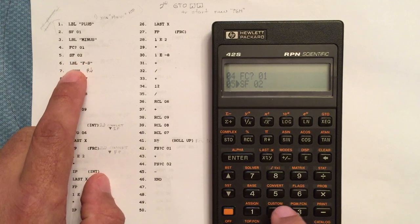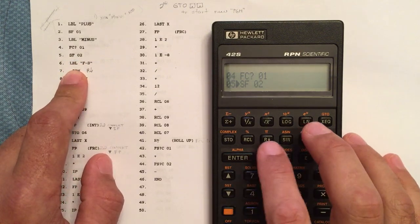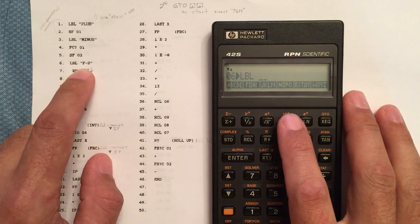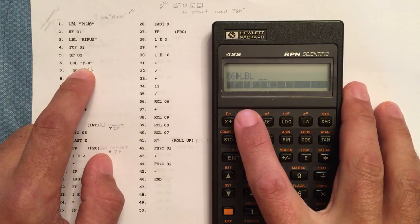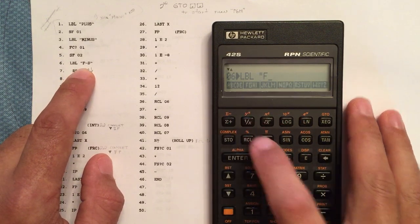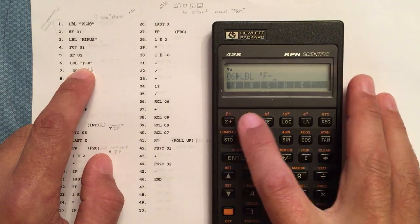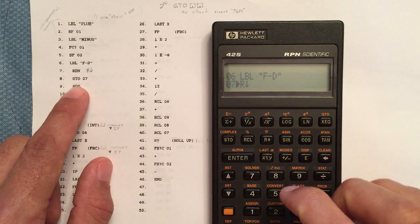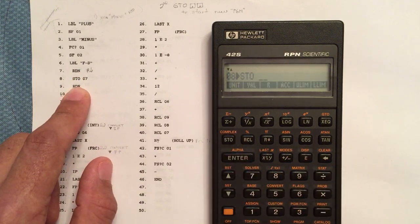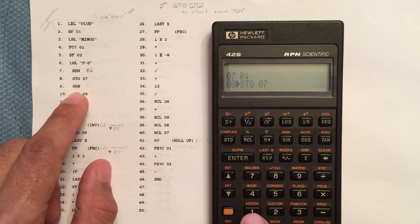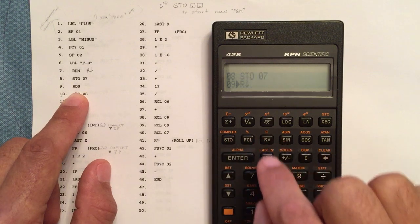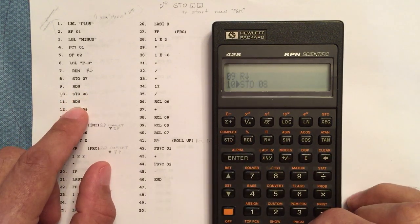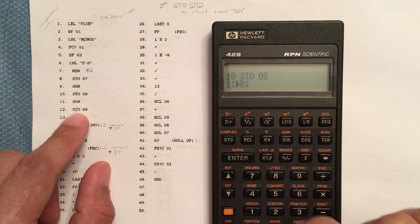Label program function label F-dash-D. Roll down. Now we're going to store into register 07. We're going to roll down, we're going to store to register 8. Going to roll down, we're going to store into register 9. Roll down.